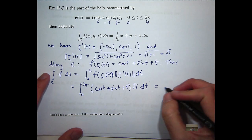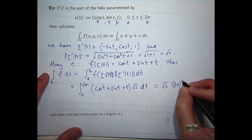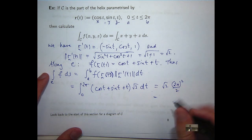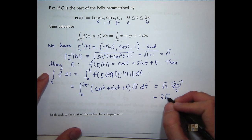If I integrate t, I get a half t squared. So if I cancel that off, you're going to get something like 2 root 2 π squared.